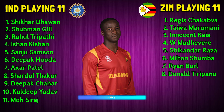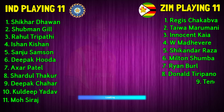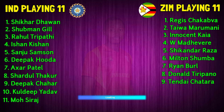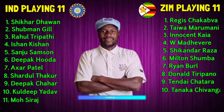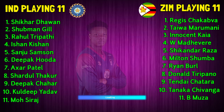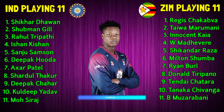Zimbabwe team bowlers: No.8 Donald Tiripano, fast bowler. No.9 Tendai Chatara, fast bowler. No.10 Tanaka Chivanga, fast bowler. No.11 Blessing Muzarabani, fast bowler.